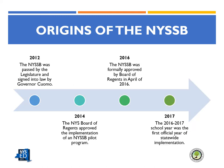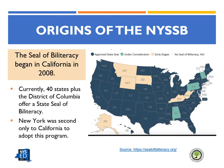To better understand the seal, let's look at its evolution in New York State. The Seal of Biliteracy was passed by the legislature and signed into law by Governor Cuomo in 2012. In 2014, the New York State Board of Regents approved a pilot program in a limited number of districts. The criteria for students to earn the seal was formally approved by the Board of Regents in 2016, with the first full year of statewide implementation being 2016–2017. As of this module's publication, 40 states plus the District of Columbia offer a state-approved Seal of Biliteracy. California was the first state to establish a program in 2008, followed by New York in 2012. More information on other states can be found at sealofbiliteracy.org.